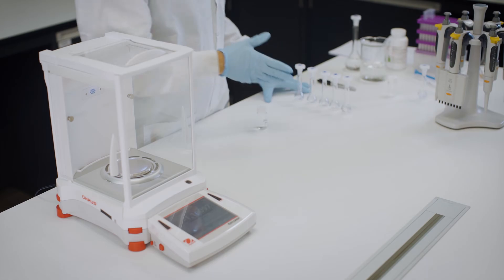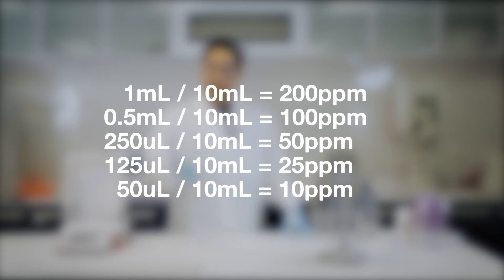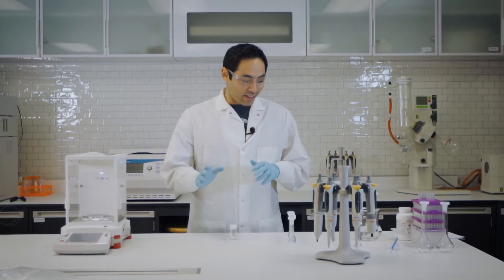From here, we're going to do our dilution. So we're going to do a 10 fold dilution for the 200 ppm. So basically what we're going to do is 1 ml of this into 10 ml for the 200, half a ml into 10 ml. So let's go ahead and get that done.